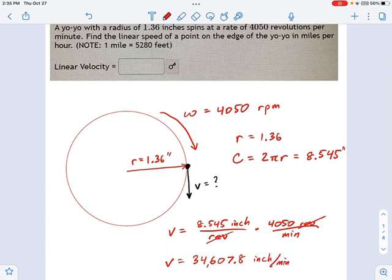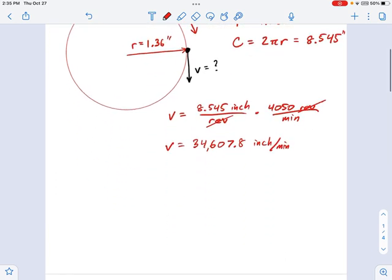Now, that's velocity. And you could write that as your answer, except for one thing. We want this in miles per hour. So all we have to do now is change the units from inches per minute to miles per hour. And that's really very easy.